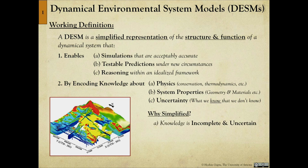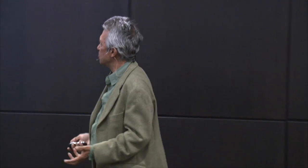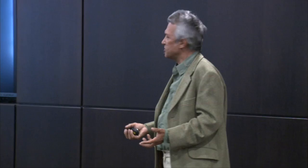Why is a model always simplified? Because knowledge is always incomplete and uncertain. The real system is what I would call infinite-dimensional — to completely represent it, you would need an infinite amount of memory in your computer. We're always working with finite resources and finite computing time. So by definition, your model is a simplified representation, and you shouldn't be surprised if it doesn't get everything perfectly right.